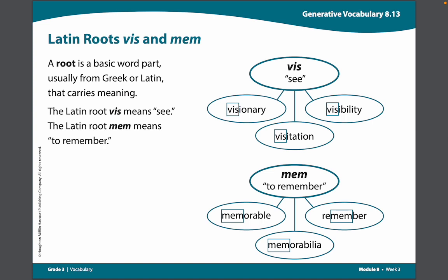Let's take a look at the diagram using the Latin root vis. This means to see. We'll start with the word in the middle: visitation. I see the root vis at the beginning of the word.